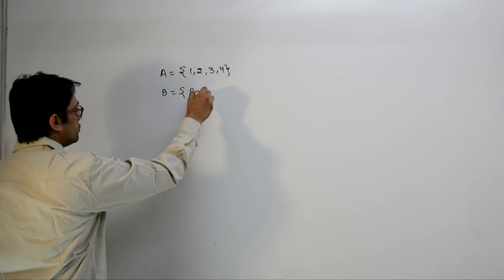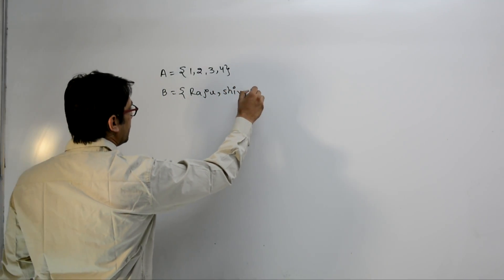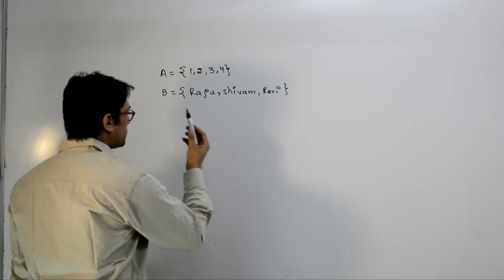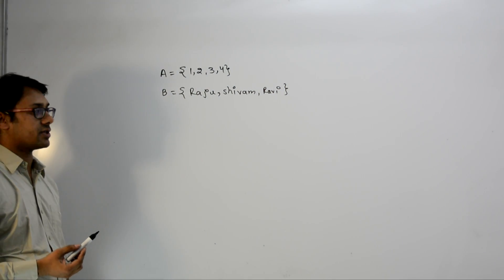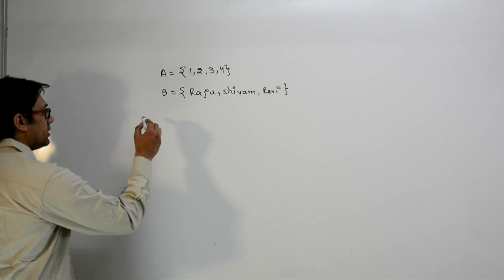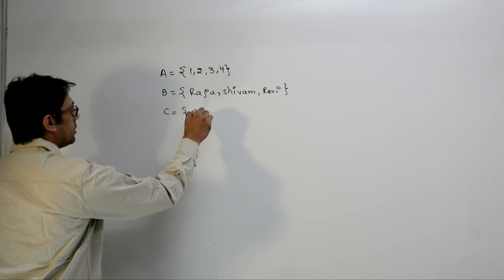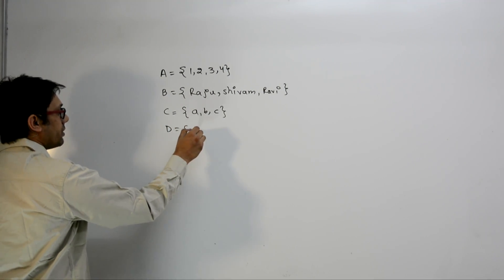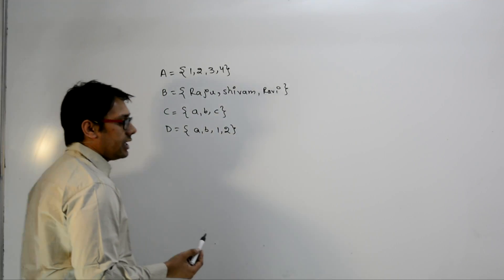In the same way, we can denote a set with names. For example, set B contains Raju, Shivam, and Ravi — exactly three objects. Similarly, set C contains characters A, B, C, and set D is a combination of characters as well as numbers.